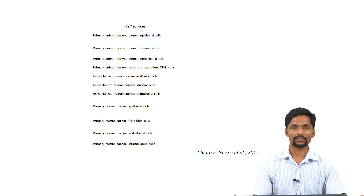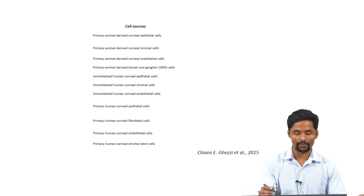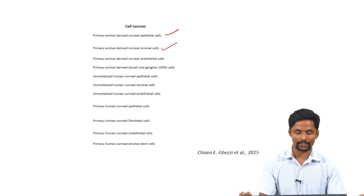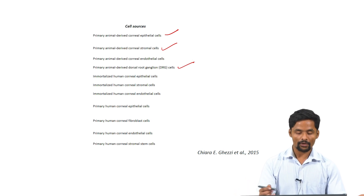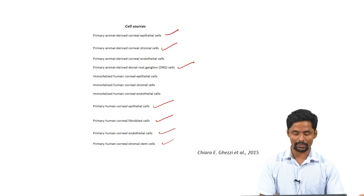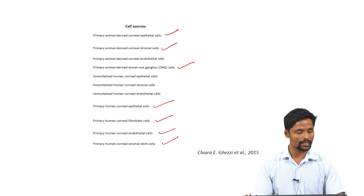Various types of cell sources have been used for constructing corneal tissue. For example, primary animal-derived corneal epithelial cells, primary animal-derived corneal stromal cells, and dorsal root ganglion cells. Researchers have also used human corneal epithelial cells, human corneal fibroblast cells, endothelial cells, and human corneal stromal cells as cell sources for constructing corneal tissue.